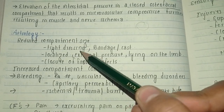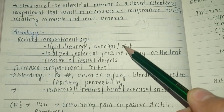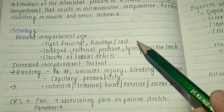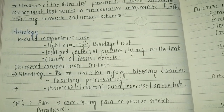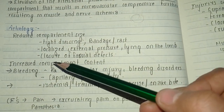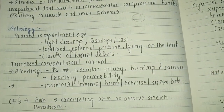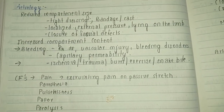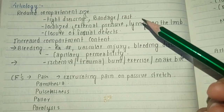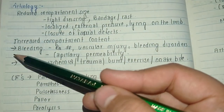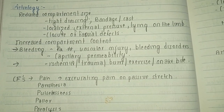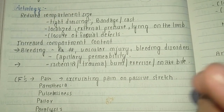What can reduce the compartment size? There are basically these causes: tight dressing, bandage, or cast; similarly, localized or external pressure — lying on the limbs, crush injury on the legs and forearm; and similarly, closure of fascial defects.